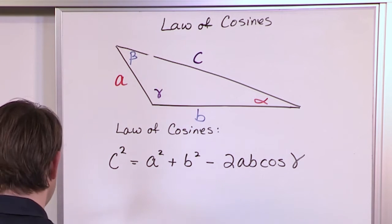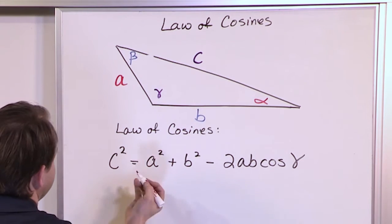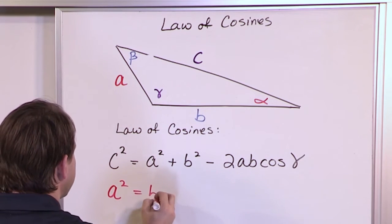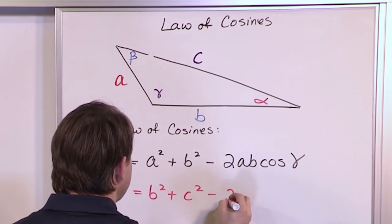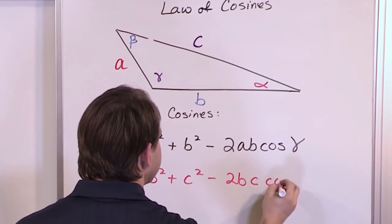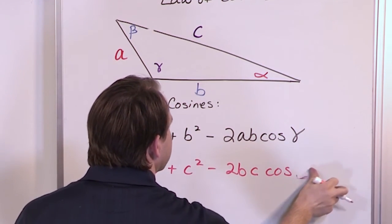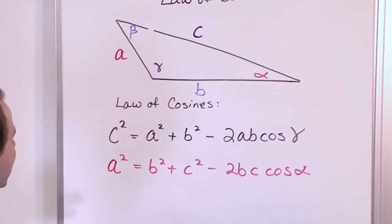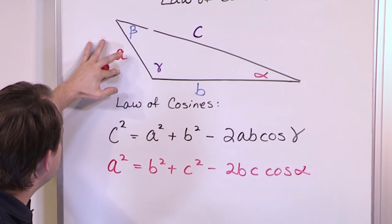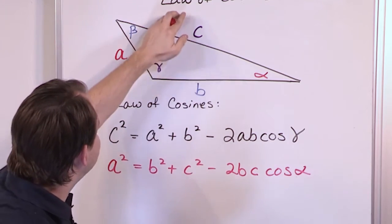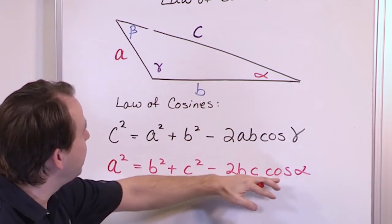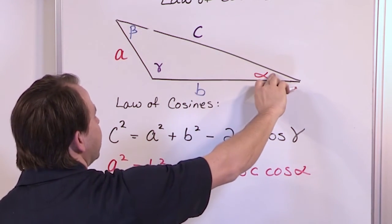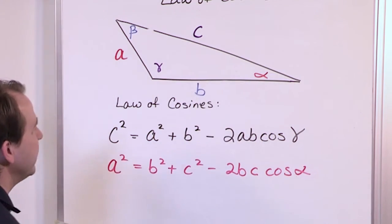Now let me write another form or this is also the law of cosines but written for the other side. A squared is equal to b squared plus c squared minus 2 times b times c times cosine of alpha. Now see how this compares. It looks exactly the same in form. A squared is equal to b squared plus c squared but I have to subtract off a special term. That is 2 times b times c times the cosine of the angle that's opposite of the one I'm trying to find.